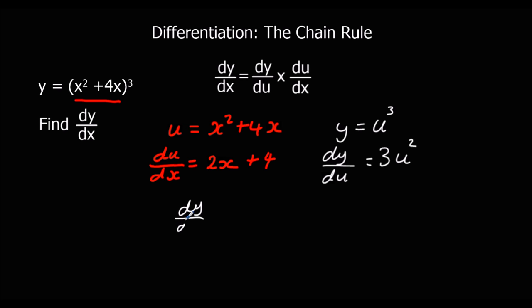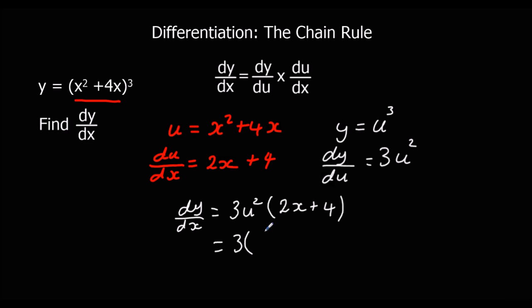We can get dy/dx now. So dy/dx is going to be dy/du, which is 3u squared, multiplied by du/dx, which is 2x plus 4. But we've still got u's and x's, so we need to get rid of the u by changing it back to x squared plus 4x. And there we have our differentiated function.